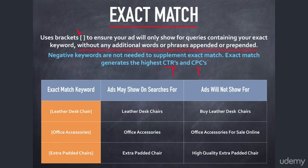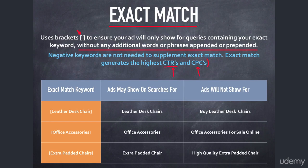Don't be scared off by high CPCs — it's not a bad thing. In fact, higher cost per click is usually a good thing. You generate higher CTRs with exact match and higher CPCs, but you're getting the best traffic. Keep in mind though that because you're controlling exactly what queries will trigger your ad with such precision, you're also cutting out the greatest amount of potentially good keywords.